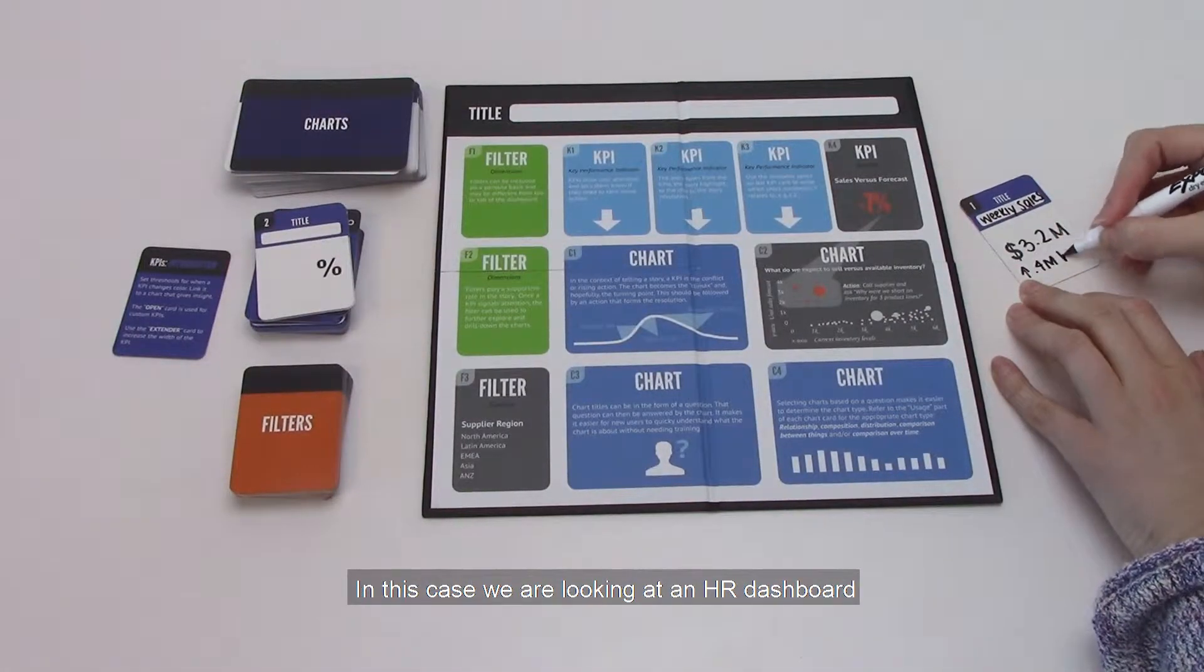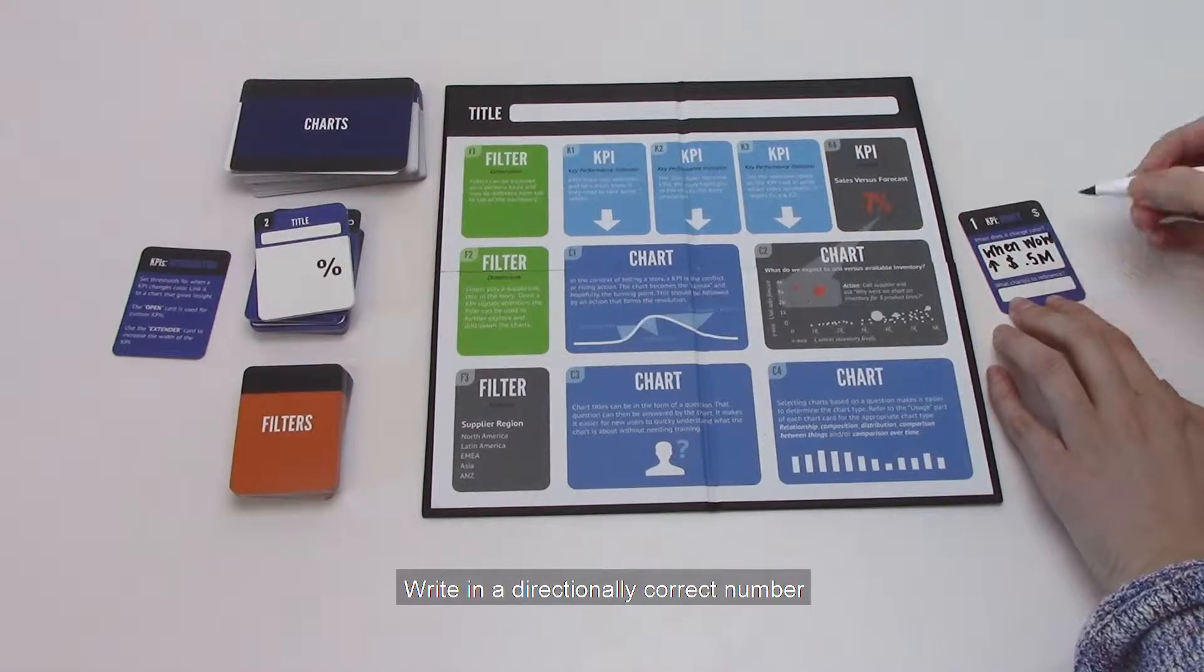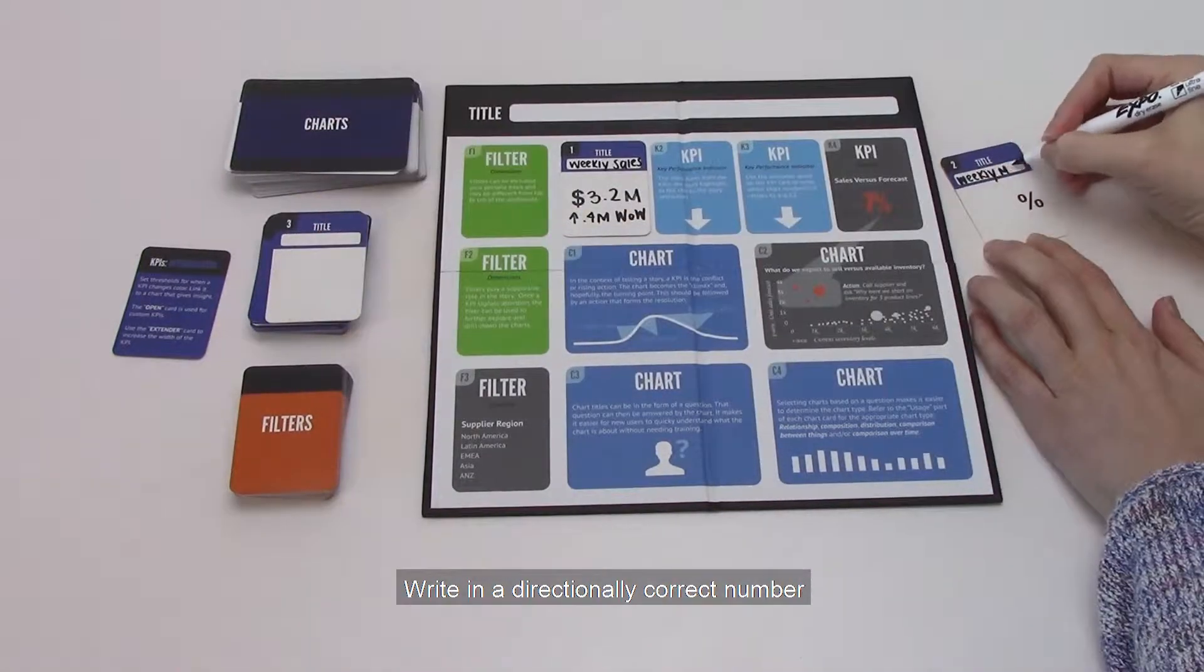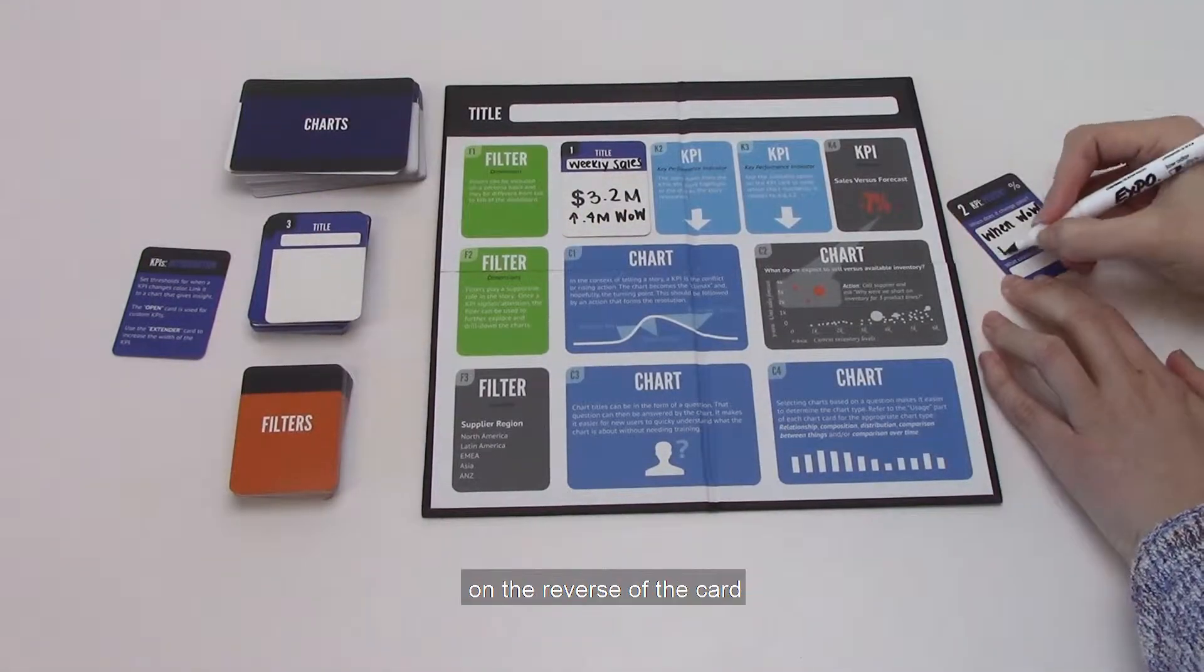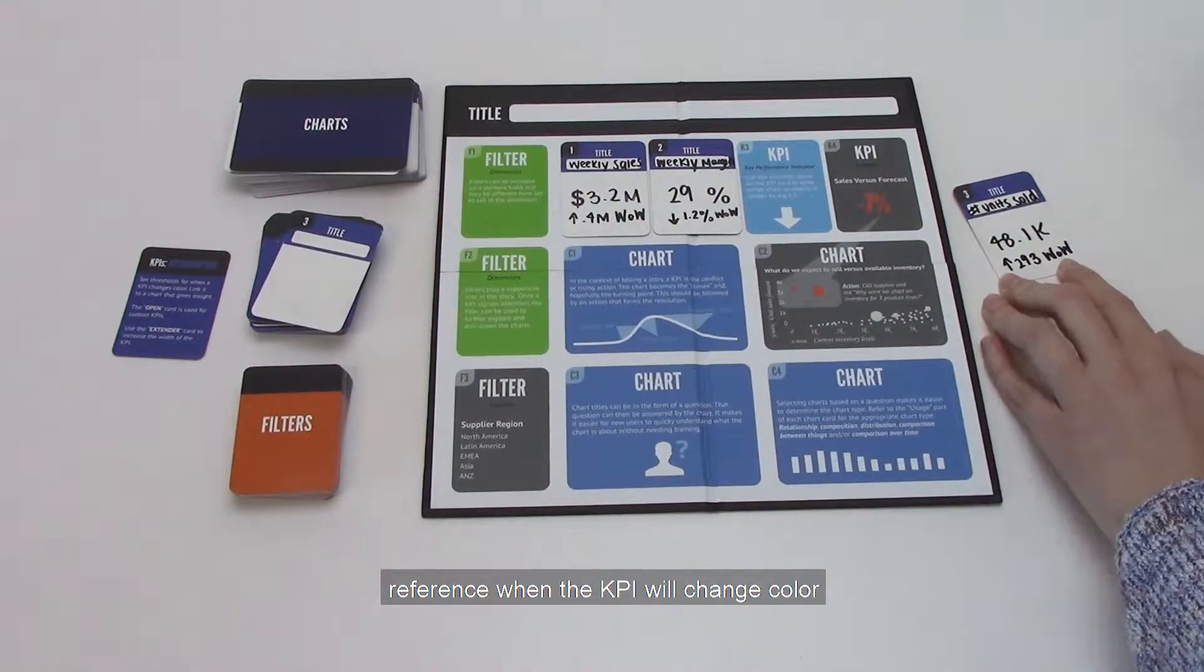In this case, we are looking at a sales dashboard. Starting with the KPIs, write in a directionally correct number and goal on the presentation side. On the reverse of the card, reference when the KPI will change color.